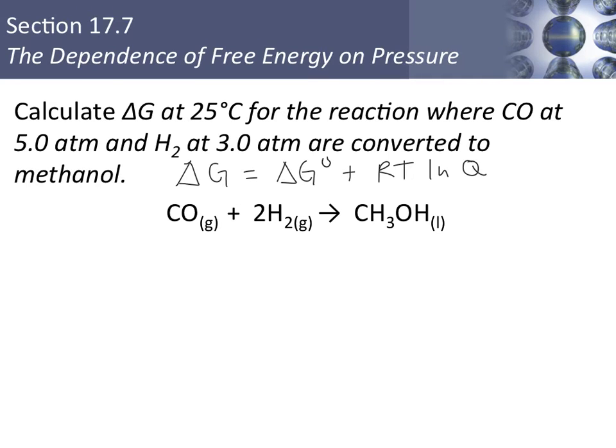So let's do an example where we calculate the enthalpy change for this reaction at 25 degrees Celsius, where we have carbon monoxide at 5 atmospheres and hydrogen at 3 atmospheres. Notice how these are pressures, and the units are atmospheres, that's what we would like to see. If we were going to use concentrations in this, we would like to see molarities.